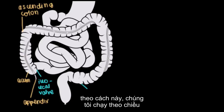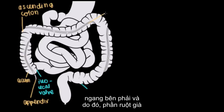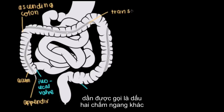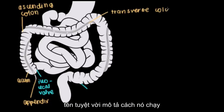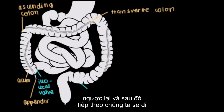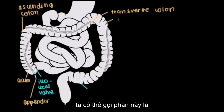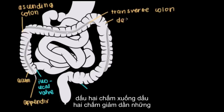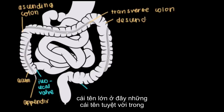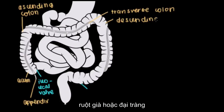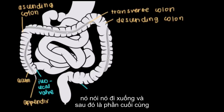Then we run transversely. The part of the large intestine that continues after the ascending colon is called the transverse colon — another great name that describes how it runs, because it runs transversely. Next, we get into the descending colon. The descending colon does what it says: it descends.